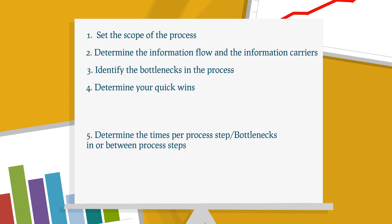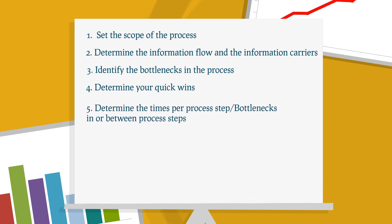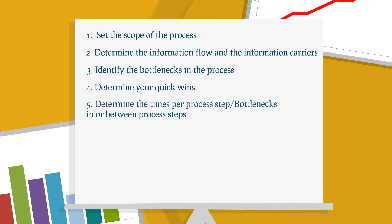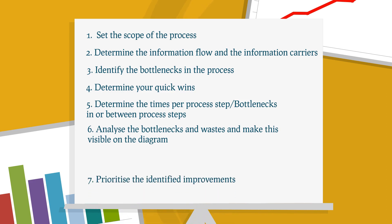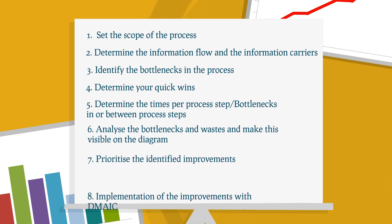5. Determine the times per process step/bottlenecks in or between process steps. 6. Analyze the bottlenecks and wastes and make this visible on the diagram. 7. Prioritize the identified improvements. 8. Implementation of the improvements with DMAIC.